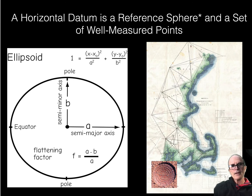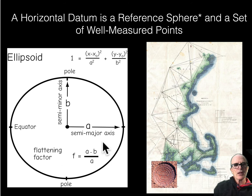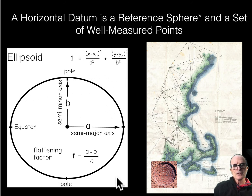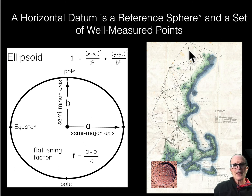We define horizontal reference surfaces and a set of well-measured points to define a datum. A datum is a systematic set of well-measured points used as the base for all positioning. We need both the sphere and the points on it. We define a horizontal semi-major axis and a vertical semi-minor axis; this equation defines the ellipsoid. If A equals B, it's just a spheroid. We also define the location of the center, and together with well-measured monumented points on top, this gives us a datum.